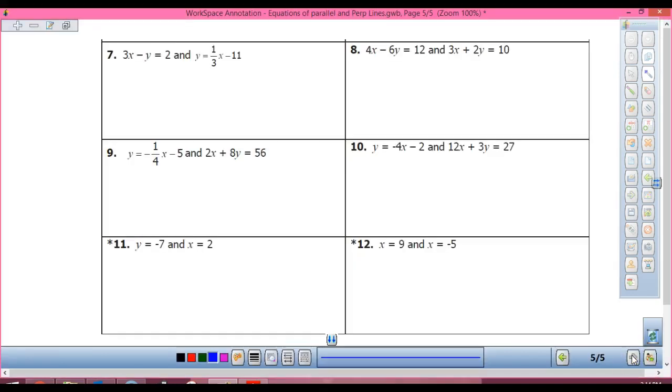Let's look at eleven as well. In eleven, my line is what kind of line? My y equals negative seven is horizontal. My x equals two is vertical. What kind of lines do I have? Perpendicular.